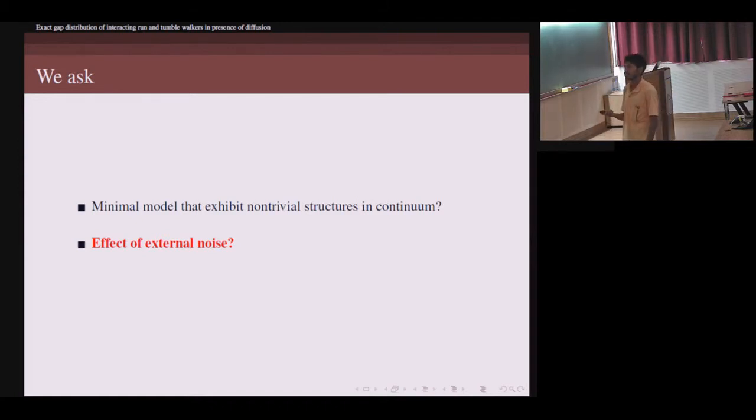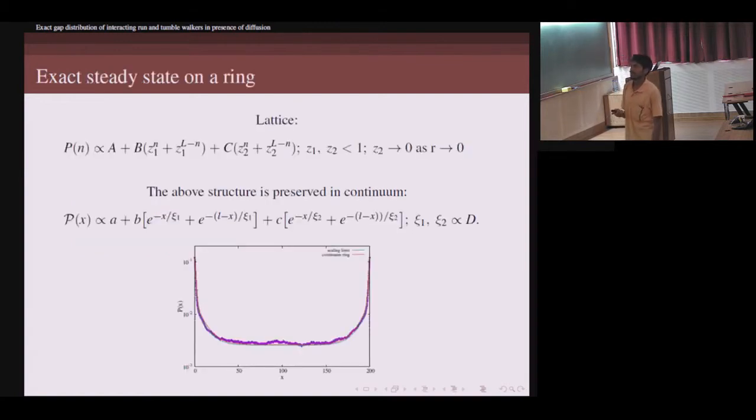Even this model, when you introduce noise, can be exactly solved in lattice and continuum in both cases. In the lattice, this n is the separation between the two particles. z1 and z2 are two length scales which both are less than one so it is exponentially decaying. To compare with Evans' result, this z2 is the new length scale which appears in presence of diffusion, and as the lattice diffusion constant tends to zero, this z2 also goes to zero, which is consistent.